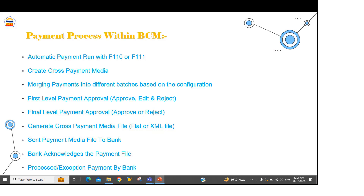In the first level approval, we have the option to approve the batch, edit the batch, or reject the batch. Whereas in the final level approval, we have only the option to approve or reject — we cannot make changes. Once a payment has reached final level approval and is approved, we generate the payment media file in XML or text format, send it to the bank, and the bank acknowledges it. If it has been processed or has any kind of exception, that is reported by the bank and can be monitored in the SAP system with the help of BCM.